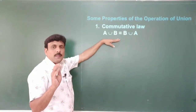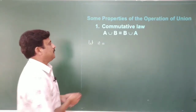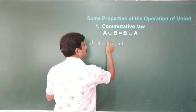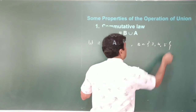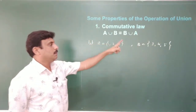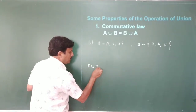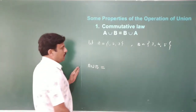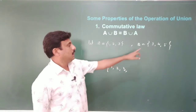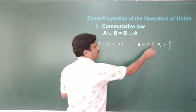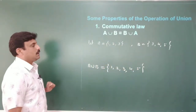To prove the commutative law by example: let A = {1, 2, 3} and B = {3, 4, 5}. Calculate A ∪ B: write elements of A — 1, 2, 3 — then elements of B — 3 is repeated, so write 4, 5. Therefore A ∪ B = {1, 2, 3, 4, 5}.